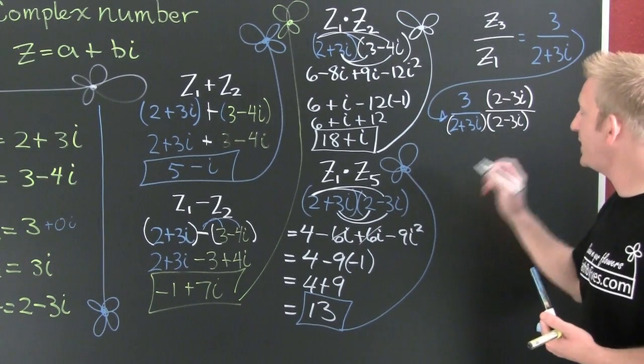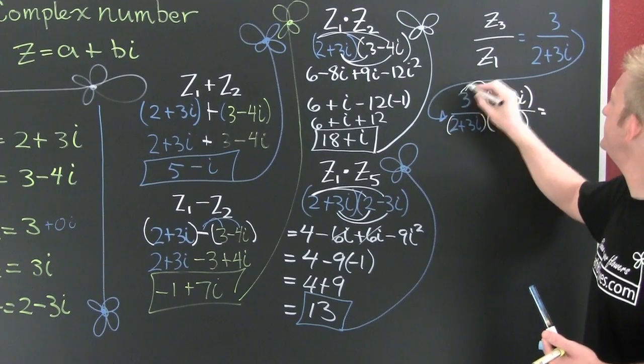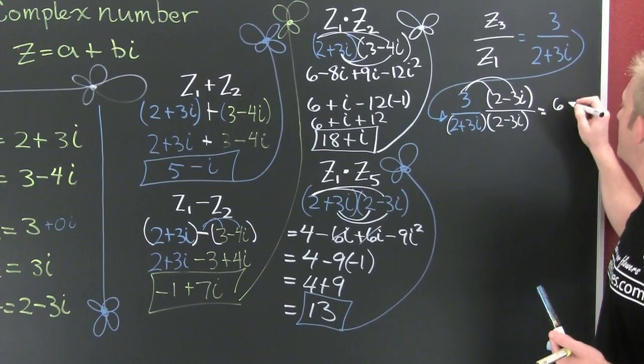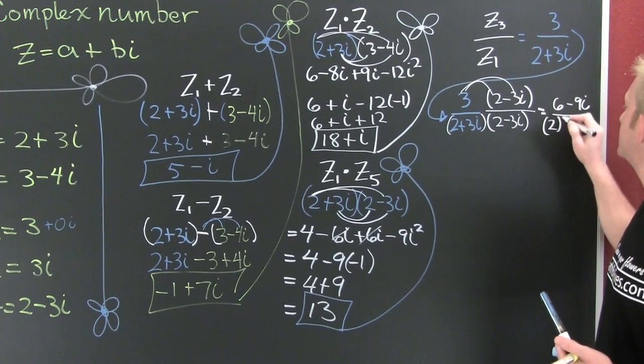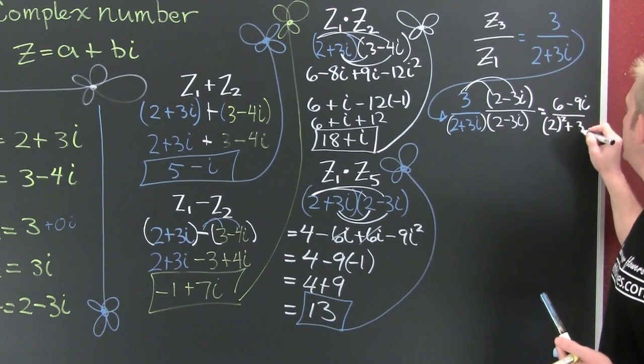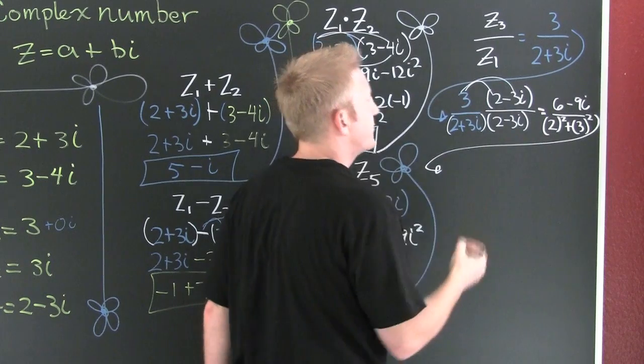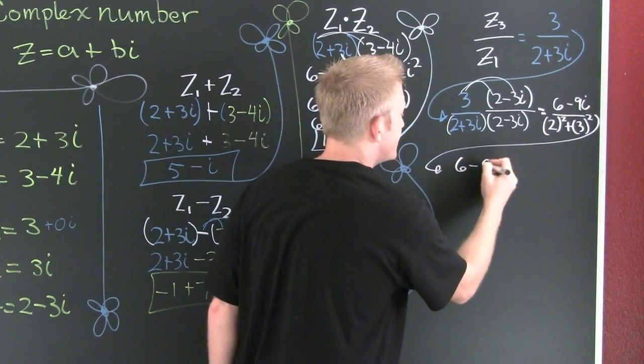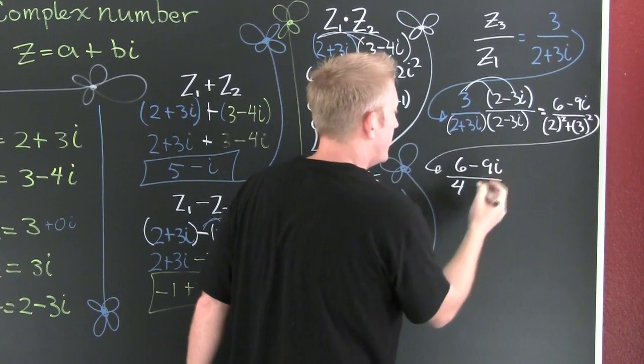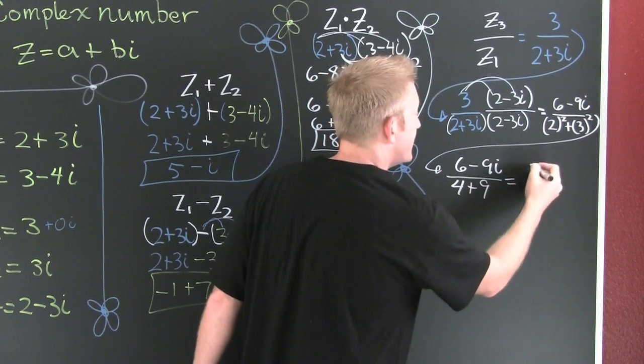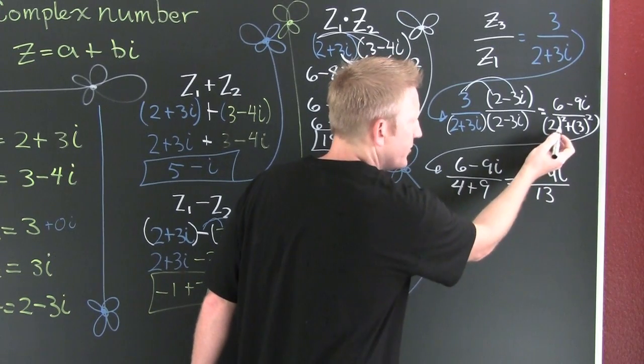I found in my last example this is going to be 13. That was set up well. So then up here it'll be 6 minus 9i divided by 2 squared plus 3 squared. I'm using the aforementioned sum of squares. So then I have 6 minus 9i divided by 4 plus 9.